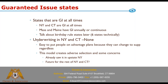States that are guaranteed issue at all times — the solid ones that are always guaranteed issue absolutely every second of every day — are New York and Connecticut. Usually when I talk to people I say there are four all-time guaranteed issue states and toss Mass and Maine in there, but that's not technically true. Massachusetts and Maine require a GI period for every supplement at least once annually. Technically, that's six states when you include birthday rule states.